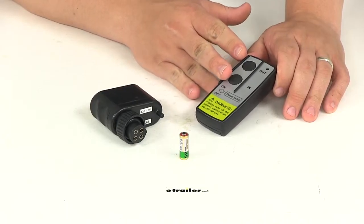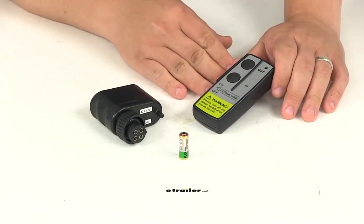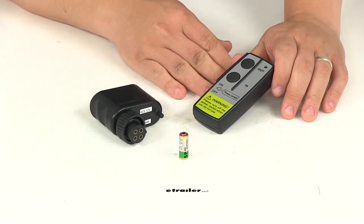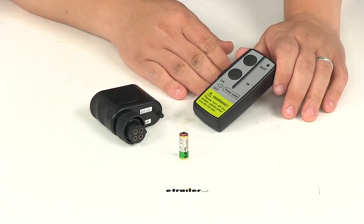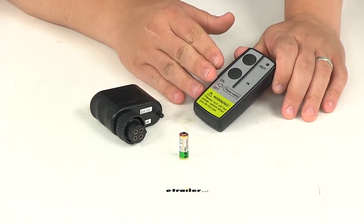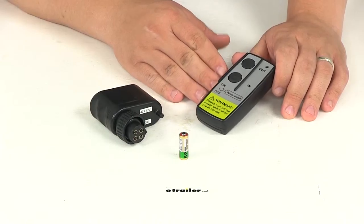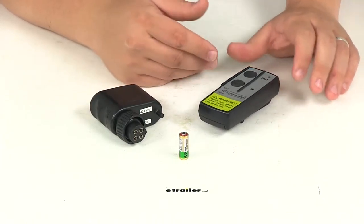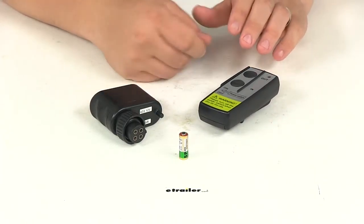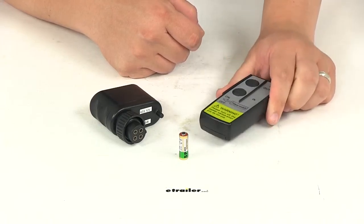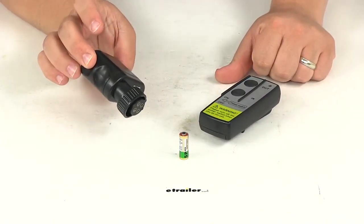The wireless remote works for trailer winches 15017, 15018, 15019, and 15020. It also works with snow plow winch 15021. Very easy system to use. You have a couple different components: your handheld remote and your receiver.